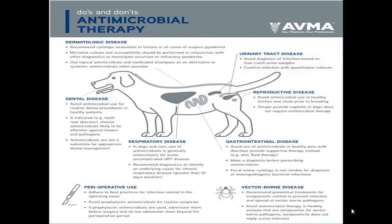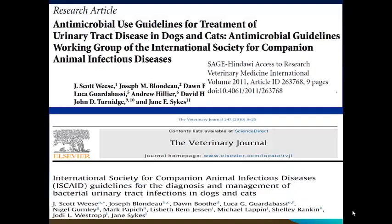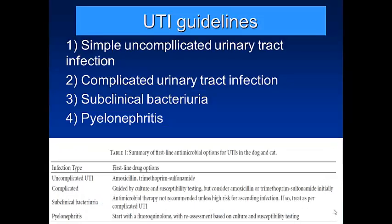Just as superficial skin infections accounted for the largest reason for overuse of antimicrobials, urinary tract infections are another area where we certainly misuse and overuse antimicrobials, because there have been no clear guidelines for diagnosing and treating many of these conditions. Two documents were put together by the working group of the International Society for Companion Animal Infectious Diseases — one launched in 2011 and a second in 2019 — and there have been many changes between them.